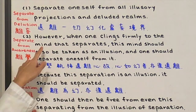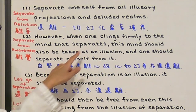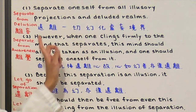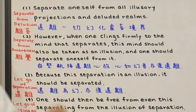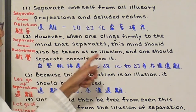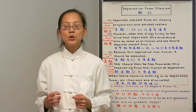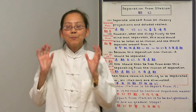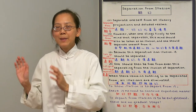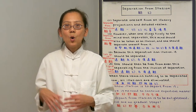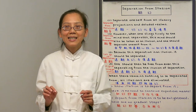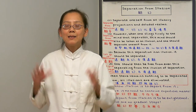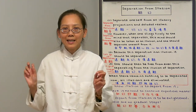Step 2: When one clings firmly to the mind that separates, this mind should also be taken as illusion and one should separate oneself from it. We do not want to cling to the mind that is doing the separation from illusion, because when you attach to it, it is also an illusion. For example, when we meditate, we usually call it mindfulness meditation, because we have awareness that is mindful of an object of meditation such as the name Amitabha or emptiness. In this case, we are focusing on contemplating the illusory nature of our body and mind, but this mind that is aware also needs to let go.